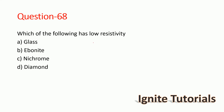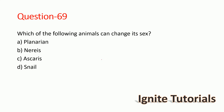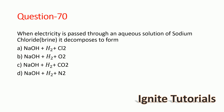Question 68: Which of the following has low resistivity? The lowest resistivity belongs to nichrome. Question 69: Which of the following animals can change its sex? The animal that can change its sex is the snail — snails can change sex.